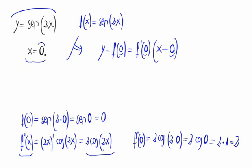That's 2. So, substituting these values we've just obtained, we have y minus f of 0, which is 0, equals 2 times x. So the final equation would be y equals 2 times x.